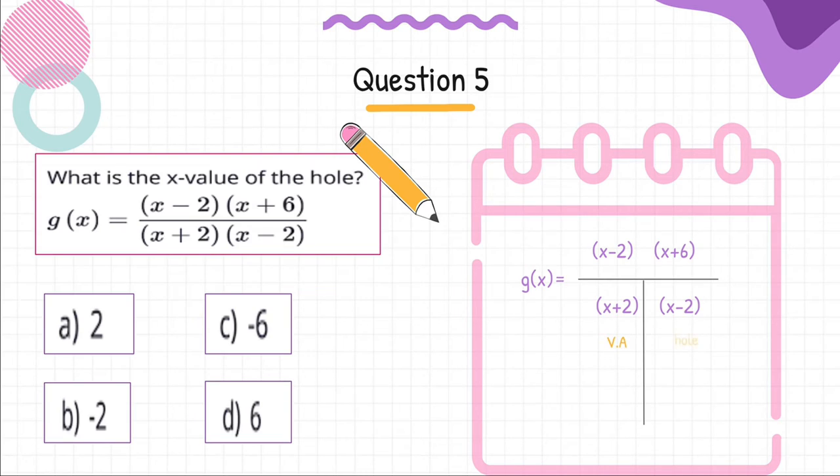Step 2: The factor x plus 2 in the denominator is the vertical asymptote, and x minus 2 is going to give the equation of the hole.